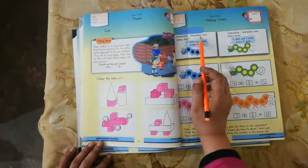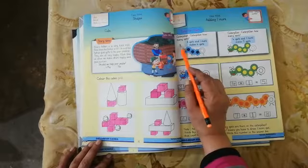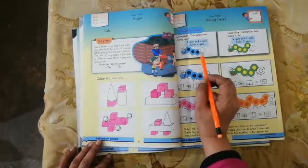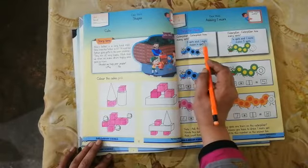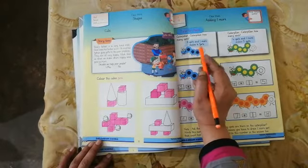What is written? Caterpillar, caterpillar. How many spots? We ask caterpillar, how many spots are made? These are the circles, these are the spots. Three spots and one more. Three spots are made, one more is made. Four.